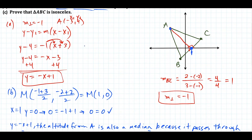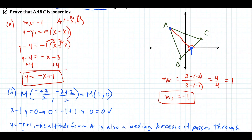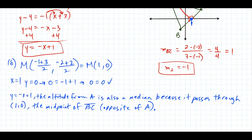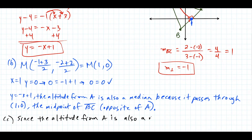Now the last thing we need to answer is proving that triangle ABC is isosceles. We did the bulk of the work already. There's a helpful theorem that says if the altitude of a triangle is also a median, then the triangle is isosceles. So we can write that concluding sentence. If this theorem wasn't known to you, there is also another way to answer this — let's look at an alternate way of answering part C.